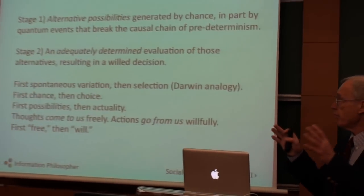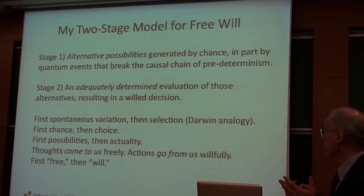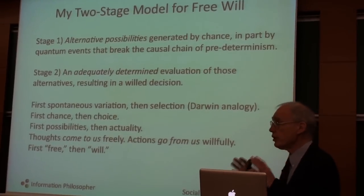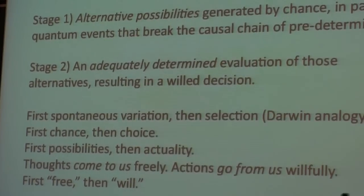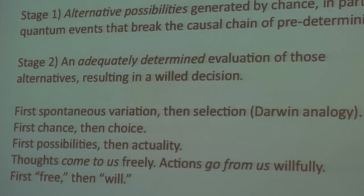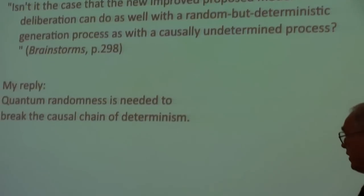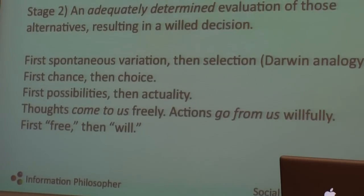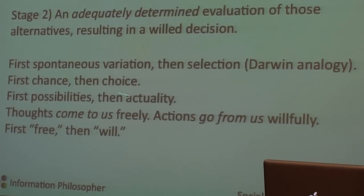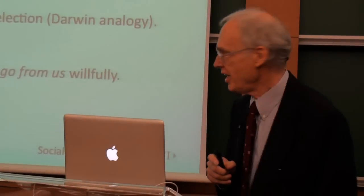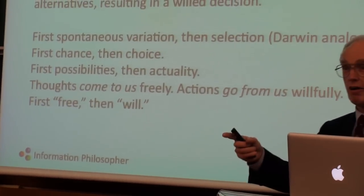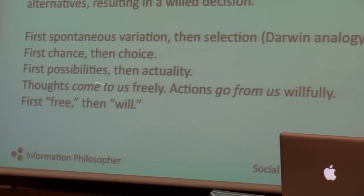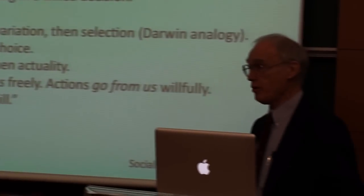So what is the model? In stage one, very simply, alternative possibilities are generated by chance, in part by quantum events that break the causal chain of determinism back to the beginning of the universe. In the second stage, an adequately determined — by that I mean to limit determinism to a determination — process will evaluate the alternatives and result in a willed decision. First, a spontaneous variation, then a selection — this is what William James called it as he applied Darwin's biological evolution to mental evolution. First chance, then choice, as Henry Marganau put it. First possibilities — which compatibilists deny ever since Harry Frankfurt, saying no possibilities, only actualism.